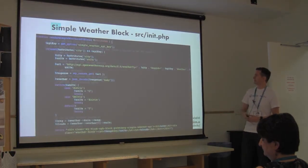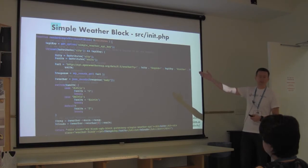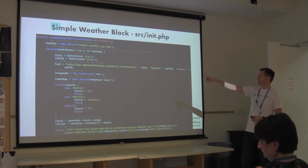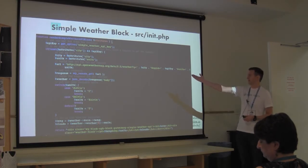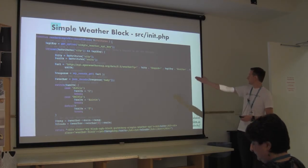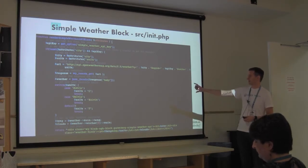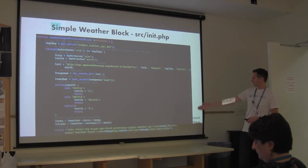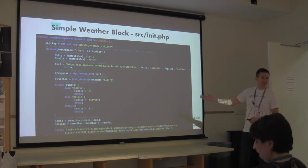Let's look at our render block function - a very basic API request. We get our API key from the database. We get the parameter of attributes as an associative array. If the attributes has a city and we have an API key, we make an API request to open weather. We build our URL, use WP_remote_get, decode the response, make a convenience conversion for Celsius/Fahrenheit/Kelvin display, and then once we have our weather we just return some HTML. Hopefully if you're used to developing plugins for WordPress, this shouldn't feel unfamiliar.